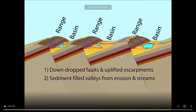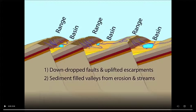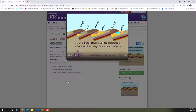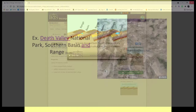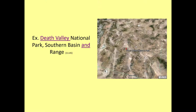The Basin and Range is a series of grabens — that's the drop-down portion. The ranges are your horsts and the drop-down portions are your basins.